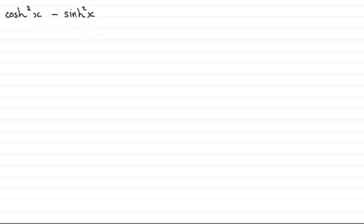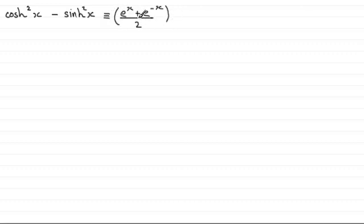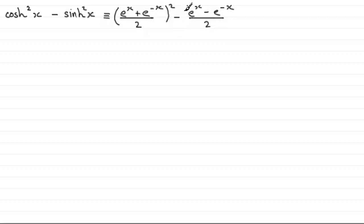To do this, we say that it's identical to — and if we write down the exponential version for cosh x, remember that is e to the power x plus e to the power minus x all divided by 2. So that's cosh x and then we're going to square that. And then we're going to subtract sinh squared x, and sinh of x is e to the power x minus e to the power minus x all divided by 2. We're doing sinh squared x so again we put brackets around that and square it.